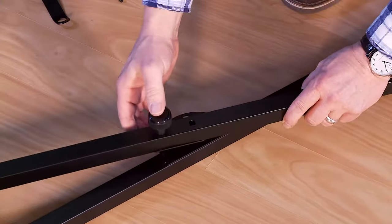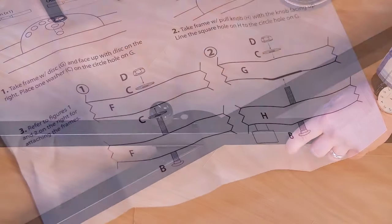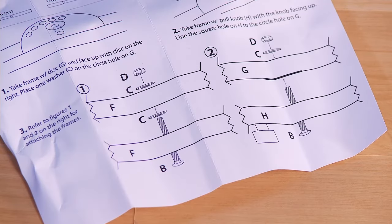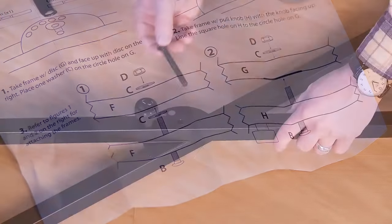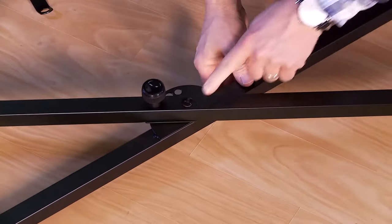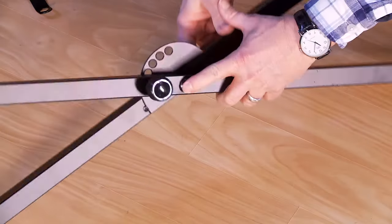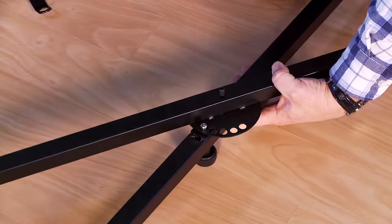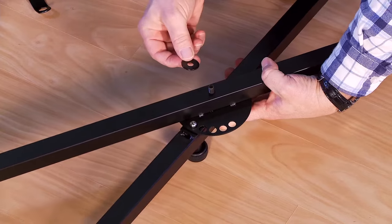Insert the pull knob into one of the holes on the disc. Connect these two frames together using a bolt, a washer, and a nut.